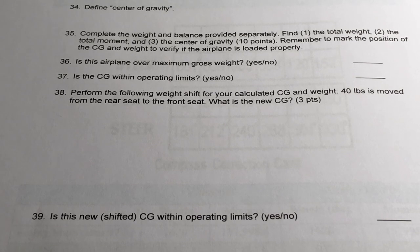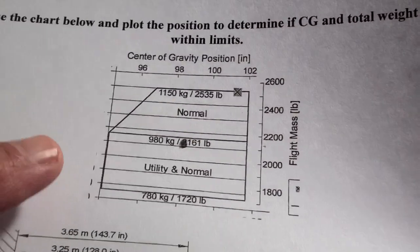Question 35 is complete a weight and balance provided separately. Find the total weight, the total moment, the center of gravity, and remember to mark the position of the CG and weight to verify if the airplane is loaded properly. We'll use the weight and balance envelope in order to do that.